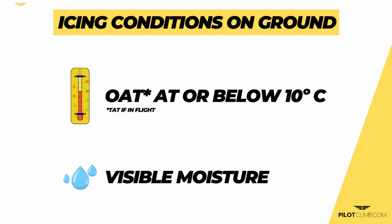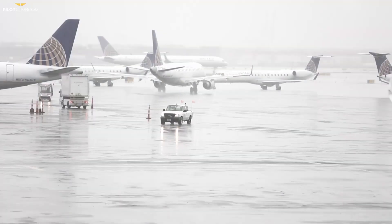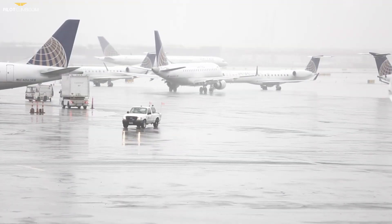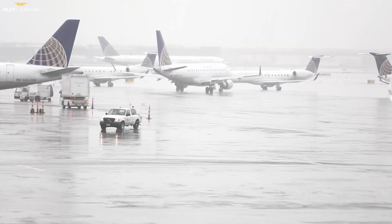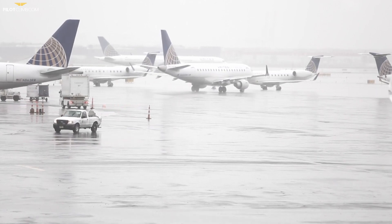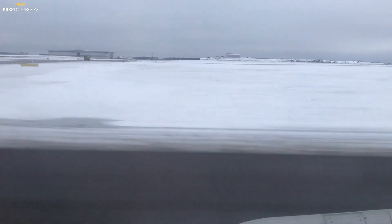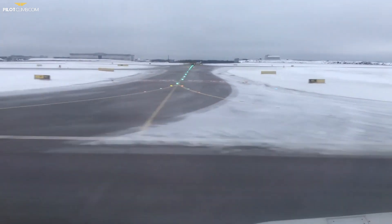Icing conditions on the ground are present whenever the temperature is 10 degrees Celsius or below and you have visible moisture. Visible moisture means low layer clouds, fog, visibility below 1600 meters, or standing water around the ramp, taxiways, or runways. So even though it's not raining that day, if you have some water on the taxiways or runway you are still in icing conditions.